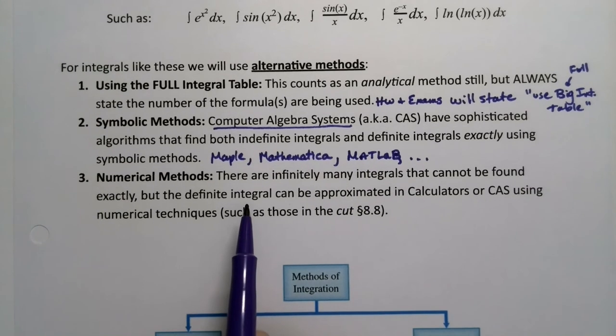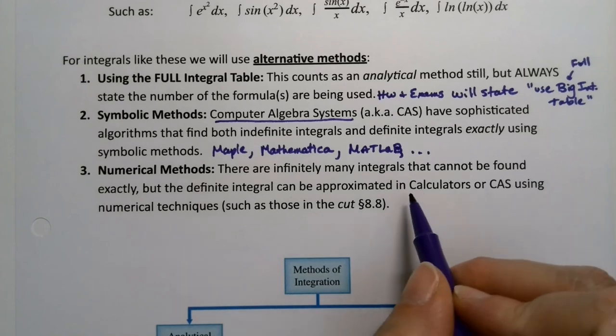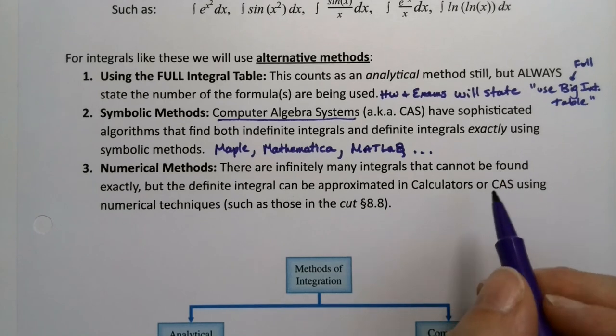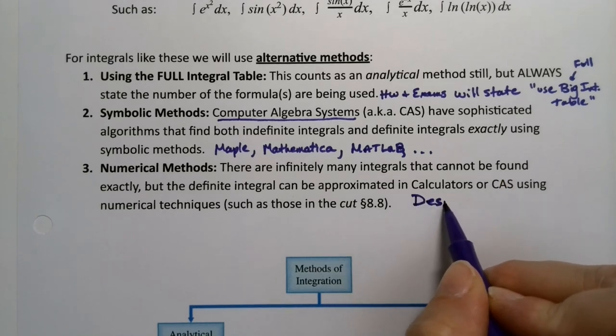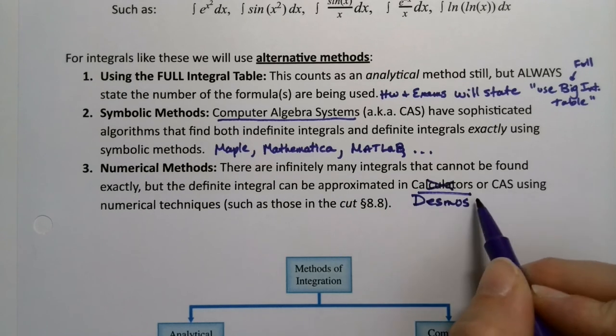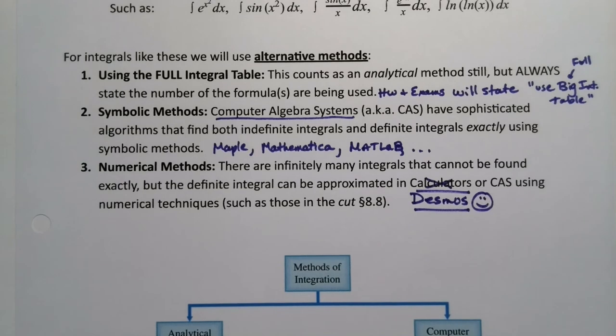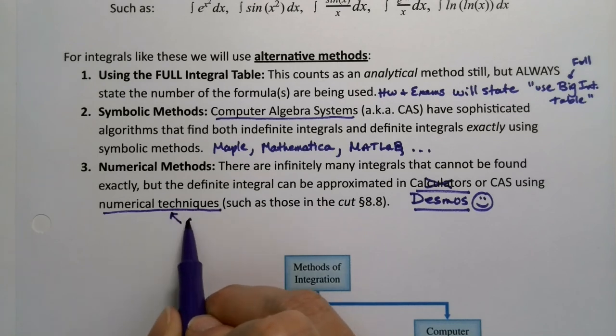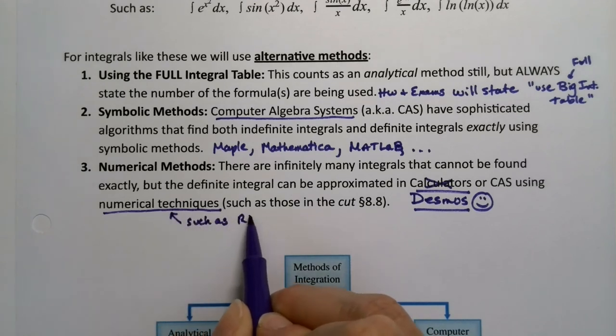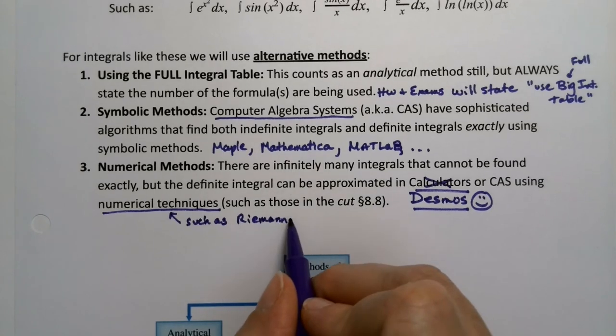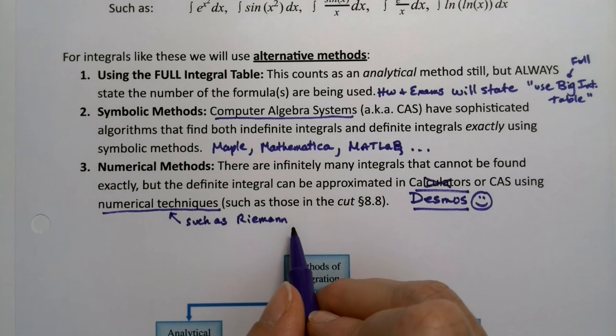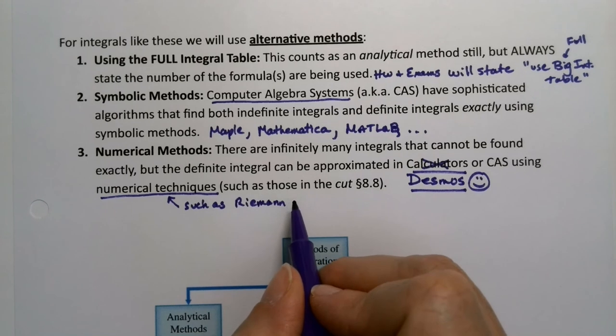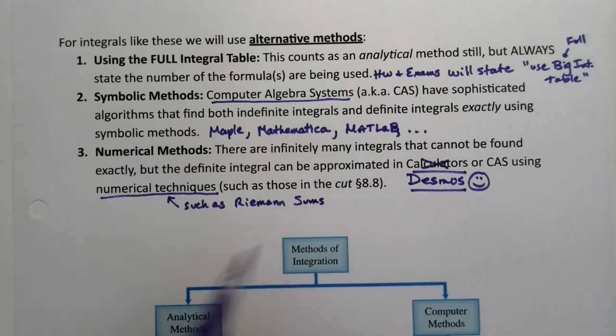Then there are numerical methods. Such as using calculators, technically you can use computer algebra systems to find numerical answers as well. And you can also use Desmos. I don't even know why I said calculators. Desmos is better, right? Why not use it? Technically, a lot of the times they're using numerical techniques such as Riemann sums, for example. There are other numerical techniques. Some of them are in section 8.8, but that section has been cut. But you're welcome to read it over or watch the books lecture video up on MathLab.